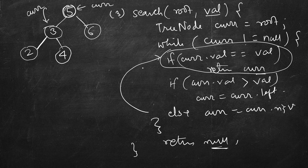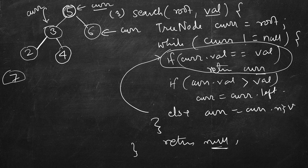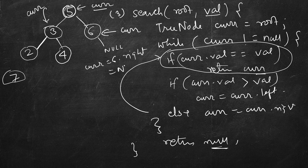Let's try searching for 7 iteratively. Current starts at the root; its value is less than 7 so current becomes current.right. Again it doesn't match, current.val is still less, so current becomes current.right again. That's 6's right child, which is null. Current becomes null, the loop ends, and we return null — we did not find 7.